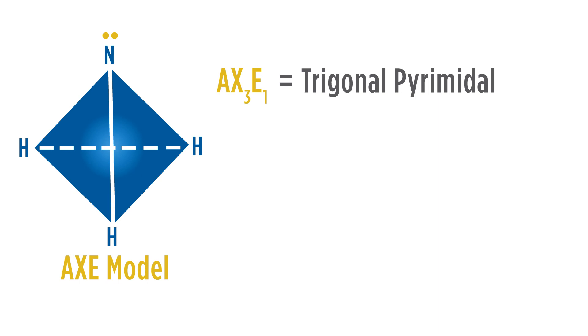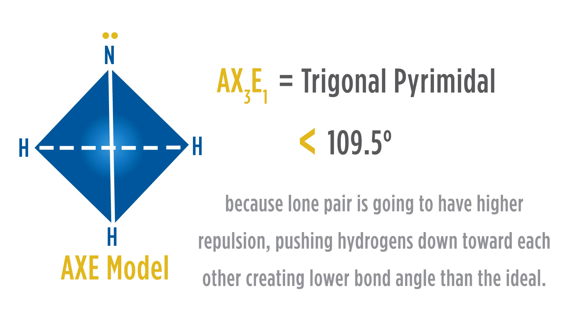This is a subcategory of the ideal tetrahedral, and the normal 109.5 degree that would be a tetrahedral is going to be decreased between the hydrogens because the lone pair is going to have a higher repulsion, pushing the hydrogens down toward each other, creating a lower bond angle than the ideal.